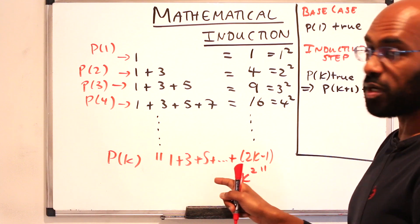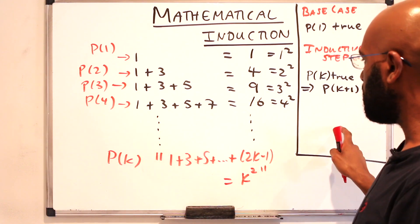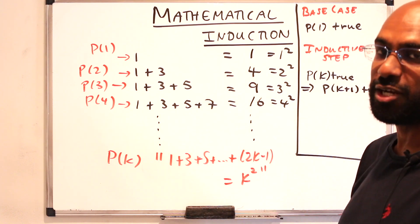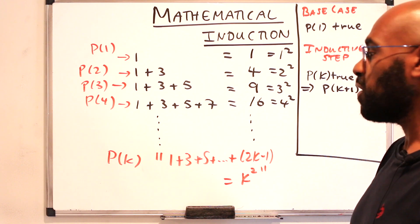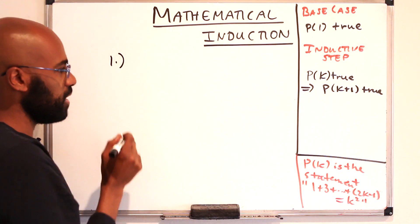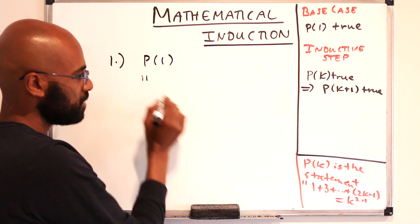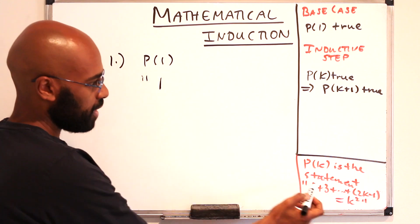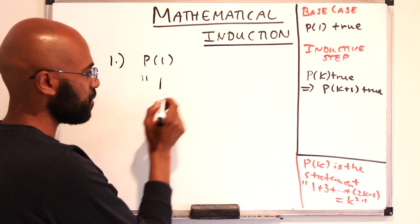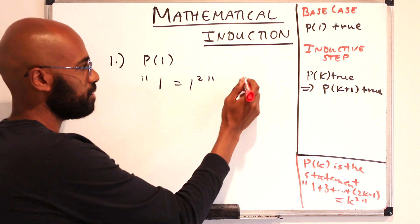This is the thing we're going to try to prove using this process. Let's go through this process, first proving the base case. Our base case is the statement p1. p1 says that the sum from 1 up to 2 times 1 minus 1, which is just 1, equals 1 squared. This is definitely a true statement — both sides are 1.